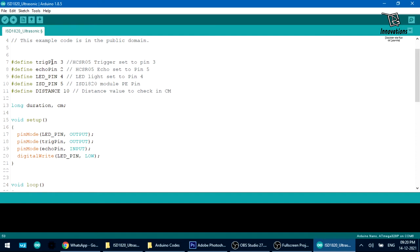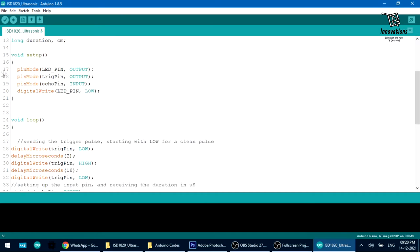We have defined digital pin 3 as trigger pin, digital IO pin 2 as echo pin, IO pin 4 as LED pin, IO pin 5 as ISD module pin, and we have set a distance of 10 cm. So whenever any object approaches beyond this distance, this will generate an alert. We can change this before uploading the sketch.